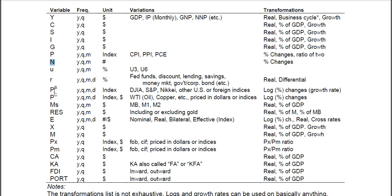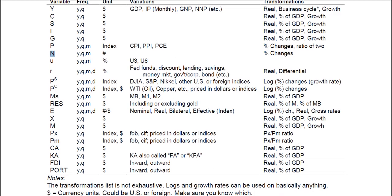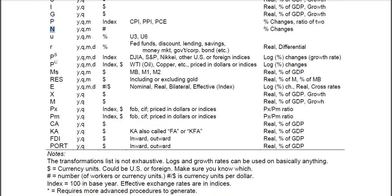PS — P superscript S — is stock prices. It can also be daily. This is an index like the Dow Jones or Standard & Poor's. Japan has the Nikkei, and there are many other U.S. or foreign indices. One thing you can do is log changes or percentage changes, which gives you the growth rate in stock prices.